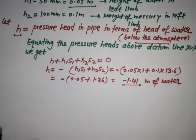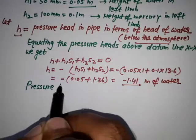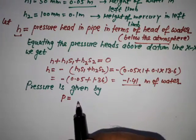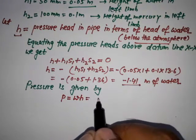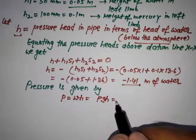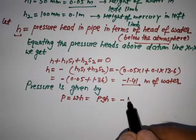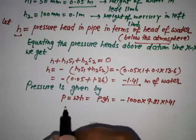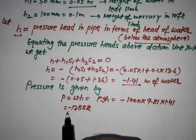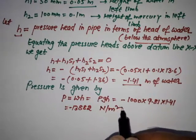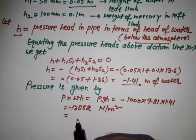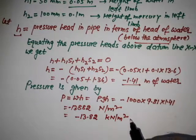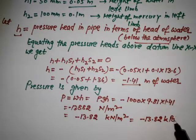Substituting the values: H equals minus (0.05×1 + 0.1×13.6) equals minus 1.41 m of water. Now pressure is given by P equals rho·g·H. So P equals 1000 × 9.81 × 1.41, which gives negative 13,882 Newton per meter square.